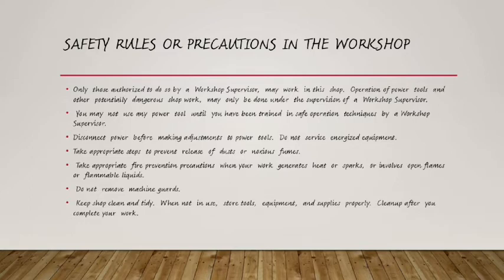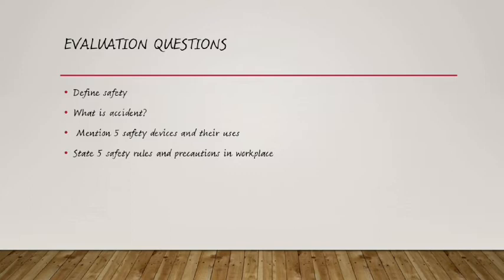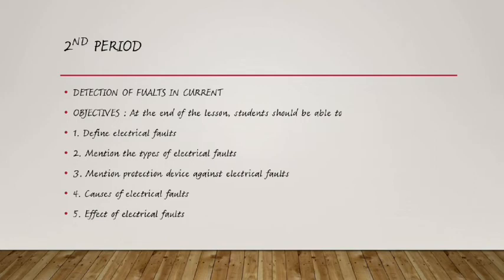That is the end of the first period. You should be able to answer these evaluation questions: define safety, what is an accident, mention five safety devices and their uses, and state five safety rules and precautions in the workshop. Now, moving to the second period — at the end of it you should be able to define electrical fault, mention the types of electrical fault, mention protection devices against electrical fault, and state the causes and effects of electrical fault.